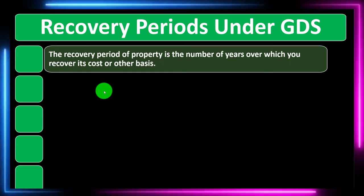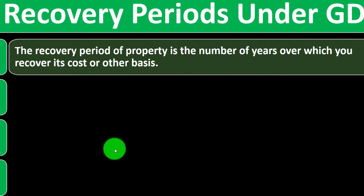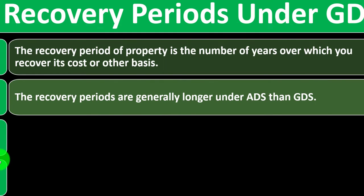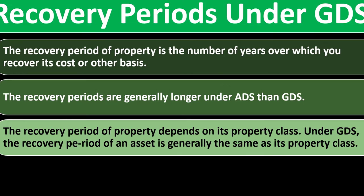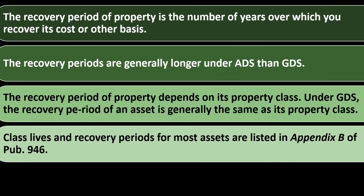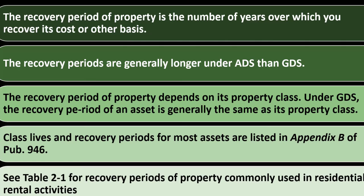Recovery periods under the GDS: the recovery period is the number of years over which you recover the cost or other basis of the property. Recovery periods are generally longer under ADS than GDS. The recovery period depends on the property's class, and under GDS it's generally the same as the property class. Class lives and recovery periods are listed in Appendix B of Publication 946, with a table for property commonly used in residential rental activities.